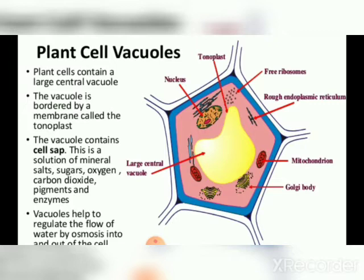Vacuoles are found both in plant and animal cells, but they are much larger in plant cells. A large central vacuole is found in plant cells.